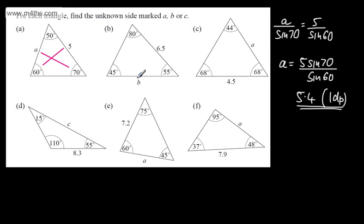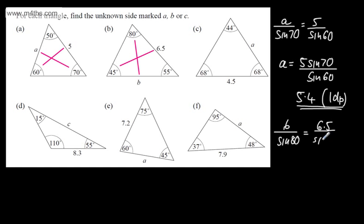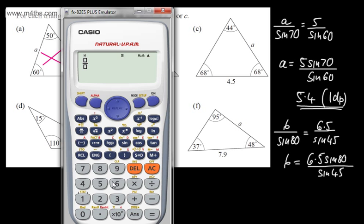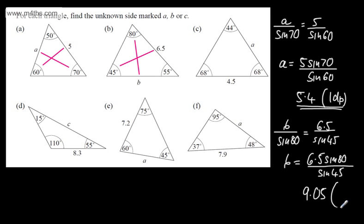Looking at another one — we need to find B. B over sine 80 equals 6.5 over sine 45 degrees. So B equals 6.5 sine of 80 degrees divided by sine of 45 degrees. Going straight to the calculator: 6.5 sine of 80 divided by sine of 45 gives us 9.05, so 9.05 units to 2 decimal places.